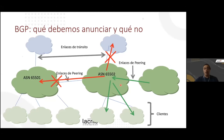The simplest way to filter is through communities — labeling what we receive from one transit versus another and from clients. This allows us to label the BGP announcements, divide them into classes, and forward each group in the corresponding direction. There are proposals at IETF for changing BGP to incorporate these considerations directly when configuring a session, stating whether it is a peering, transit, or client link. No standard is yet in place, but work is being done.